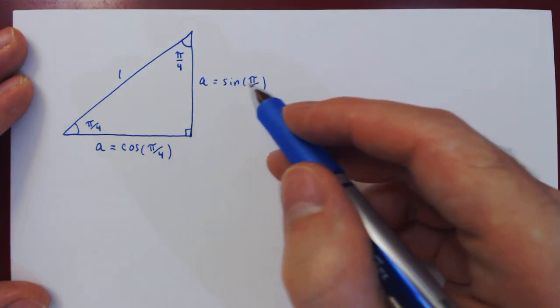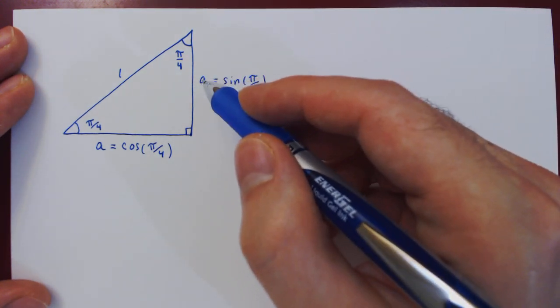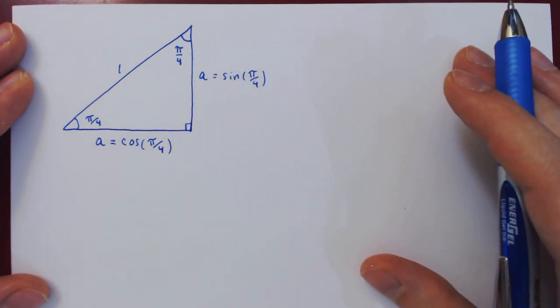So both cosine and sine at pi over 4 are equal, and we can easily now find the value of A using simply Pythagoras' theorem.